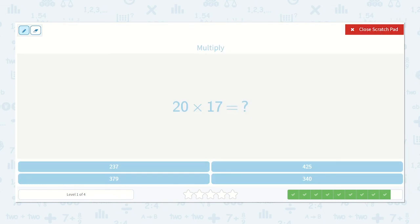Now we have 20 times 17. 7 times 0 is 0. 7 times 2 is 14. Now remember, we skip our ones place. Now we have 1 times 0 is 0, and 1 times 2 is 2. So here we have 0 plus 0 is 0, 4 plus 0 is 4, 1 plus 2 is 3, so our answer is 340, which is right here.